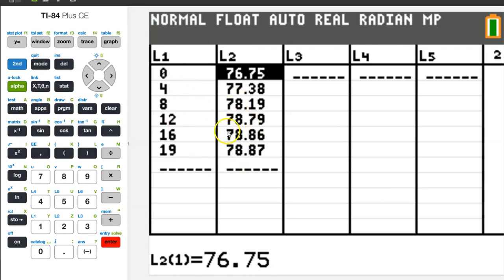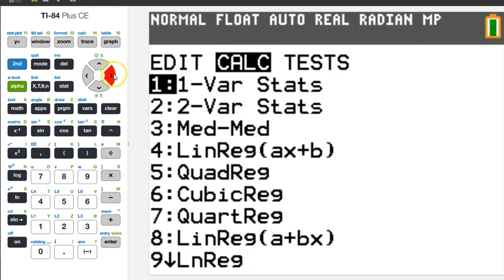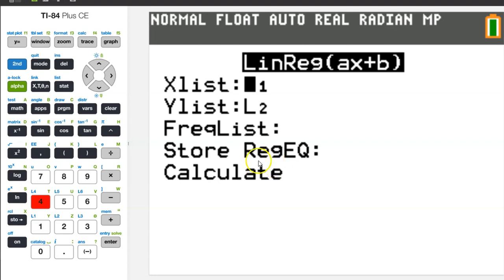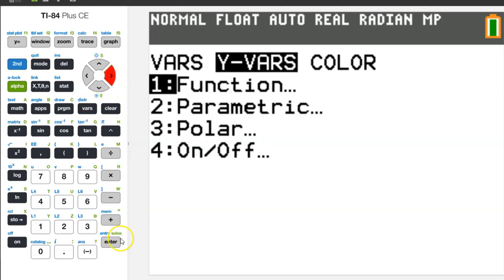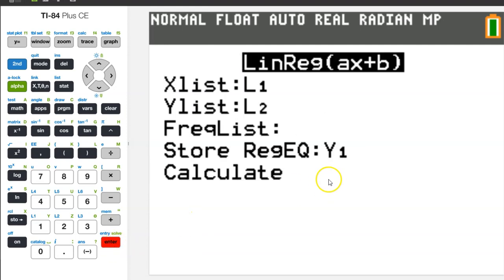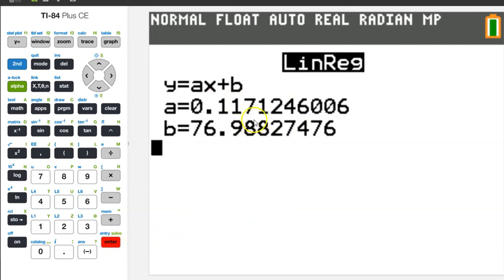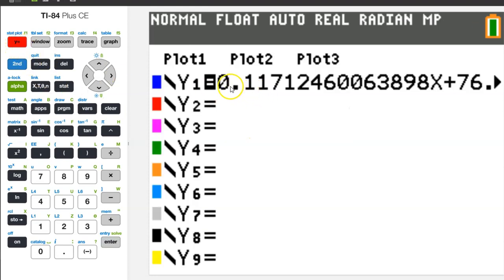Now, let's find the linear regression model by hitting STAT, switching over to the Calculate menu, and then choosing one of the linear regression models. It doesn't matter which one, I'm going to pick option 4. Before I hit enter to create the regression model, let's go down to where it says store regression equation. If we type Y1 right here, then the calculator will automatically store the model as Y1 in the Y equals area. So, hit vars, Yvars, enter, and enter for Y1. Now, when we hit enter twice to create this regression model, if we look under Y1, we see that the regression model is here entered as Y1 for us.